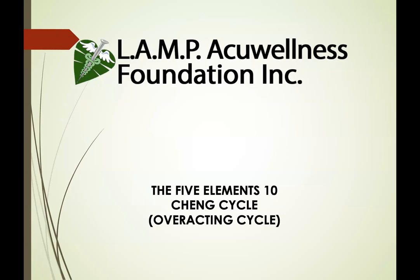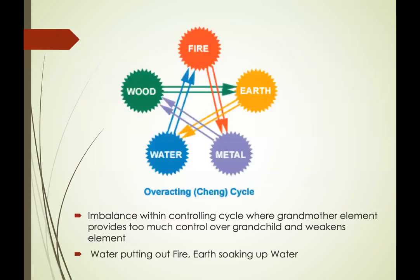The Cheng cycle, or the overacting cycle, is an imbalance within the controlling cycle where the grandmother element provides too much control over the grandchild, weakening it. Examples include water putting out fire and earth soaking up water. The arrows in the diagram indicate overacting — wood overacts on earth, water overacts on fire, and so on.